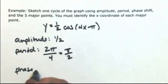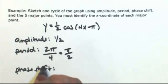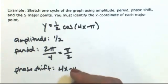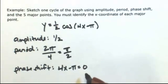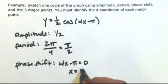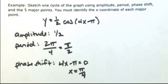To find the phase shift, we're going to take the inside part of the function and set that to zero. So four x minus pi equals zero. This has a phase shift of pi over four, which means it's going to be to the right.